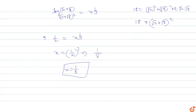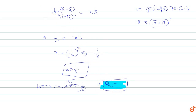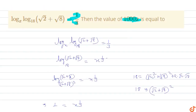Then the value of 1000x — since x equals 1/8, we get 1000 × (1/8) = 125. So 1000x equals 125. That is the answer for this question: 1000x equals 125.